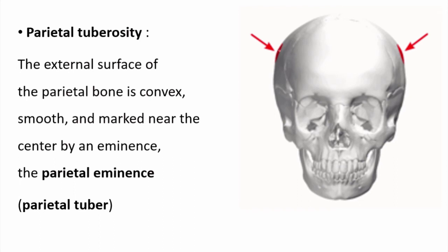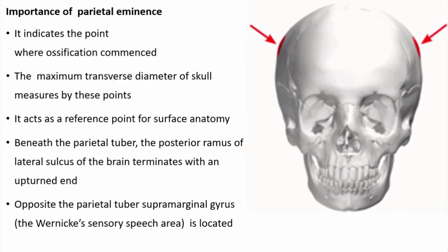The parietal tuberosity is the most convex portion of the parietal bone. It is clinically important because ossification starts here, the maximum transverse diameter of the skull is measured here, and it is used in surface anatomy. Just beneath the parietal tuberosity, the posterior ramus of the lateral sulcus of the brain terminates, and this area is related to Wernicke's sensory speech area.